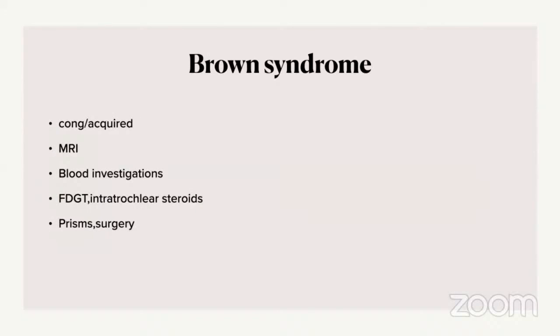In summary, for Brown syndrome management we propose: MRI with fat-suppressed sequences, blood investigations (ESR, rheumatoid factor, ANA/antinuclear antibody) depending on whether it is acquired Brown syndrome, then proceed with MRI. For acquired Brown syndrome, give intratrochlear steroids as early as possible. The forced duction guidance test (FDGT) can serve as a treatment modality. Prisms are an option, and surgery is the last resort. Thank you.